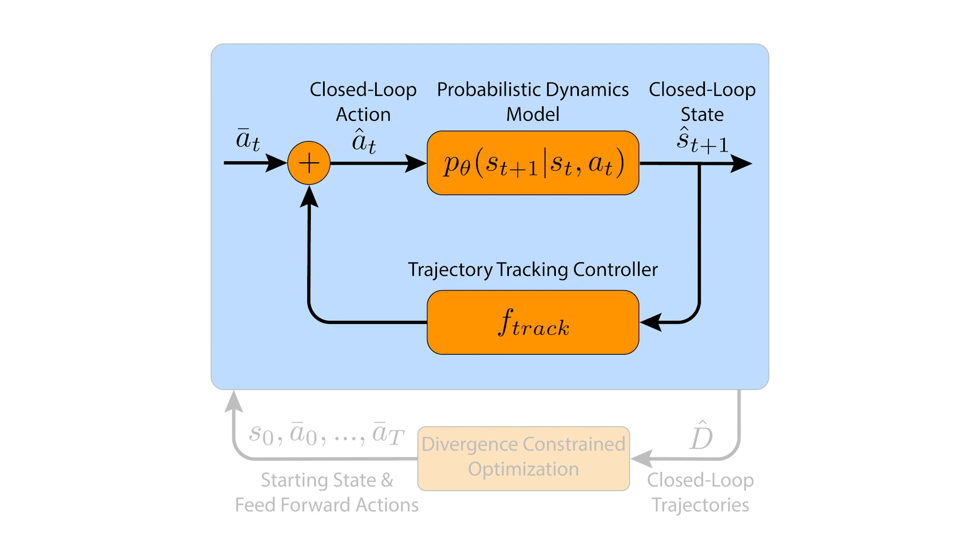Our method also considers the effects of the low-level trajectory tracking controller during trajectory prediction. This allows a predicted trajectory distribution to be more precise and capture what the robot is actually capable of.